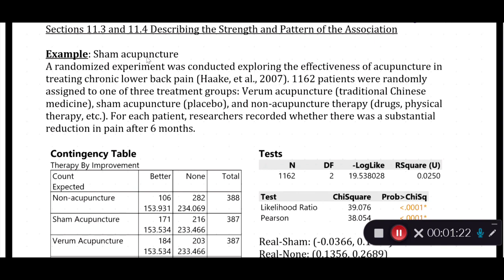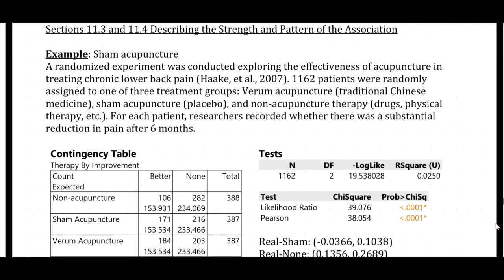For each patient, researchers recorded whether there was a substantial reduction in pain after six months. Participants were randomly assigned to only one of the three treatment groups. Pause this video and identify what is the explanatory variable and what is the response variable.